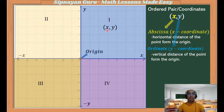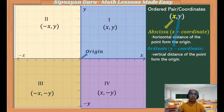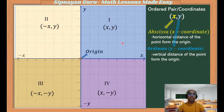In the first quadrant, the x and y are both positive. In the second quadrant, x is negative and y is positive. In the third quadrant, both x and y are negative. In the fourth quadrant, x is positive while y is negative. This labeling of the signs of the coordinates in each quadrant is very important as we plot points on the Cartesian plane.